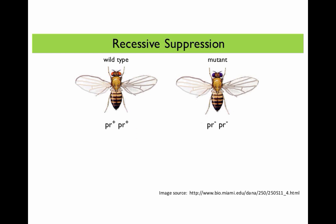So let's think of an example to explore the idea of recessive suppression, and for this we're going to turn to Drosophila melanogaster, or fruit flies, which is a favorite genetic model organism. We are going to consider the gene purple, where flies that are wild type for purple have red eyes, as you can see here in this fly. If you are homozygous mutant for the purple gene, you have purple eyes, and the mutant allele of purple is recessive to the wild type allele.